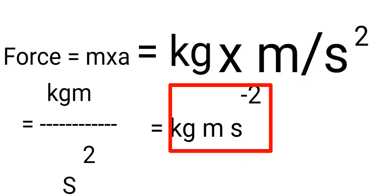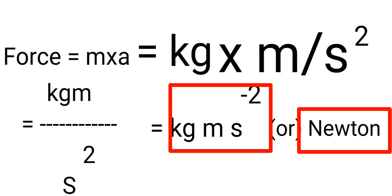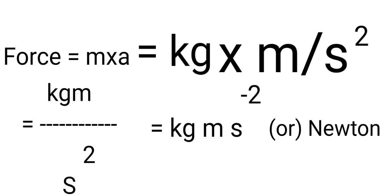I will get kg·meter·second⁻², or we can write it as a Newton. So force SI unit is a Newton or kg·m·s⁻². Thank you for watching.